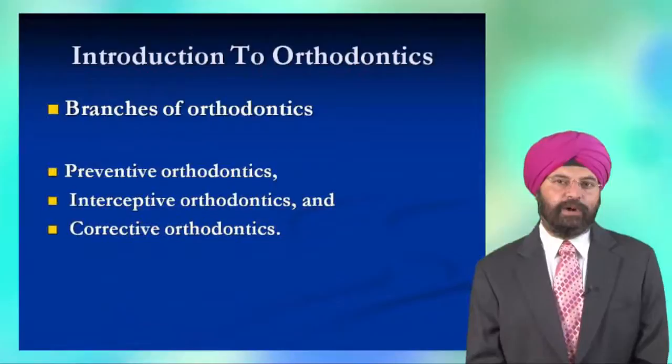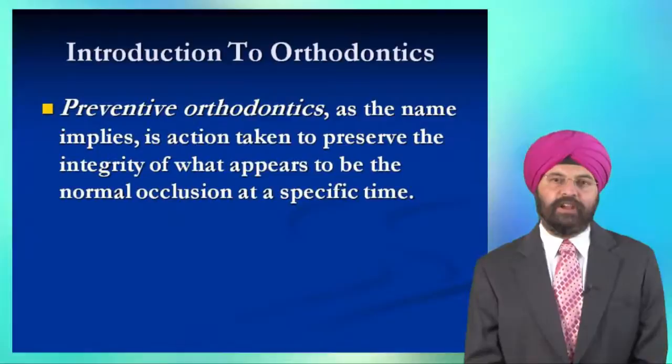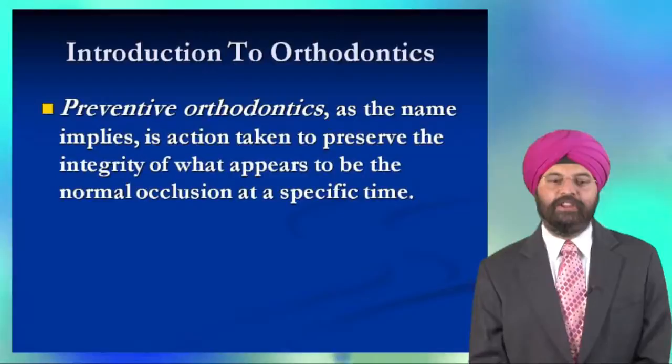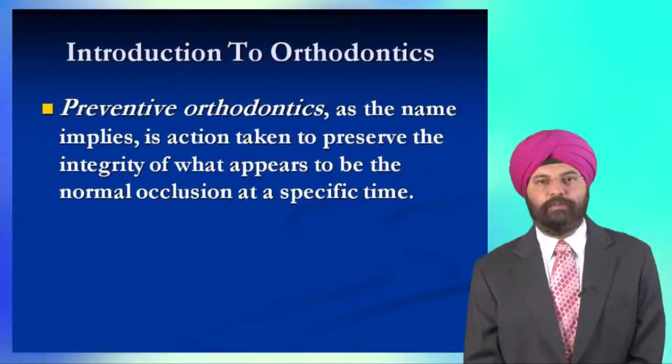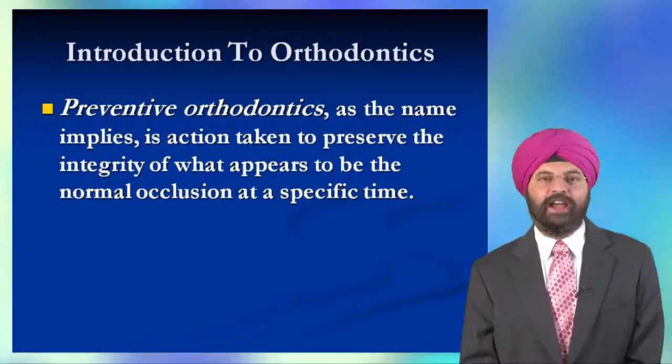Basically there are three branches of orthodontia: preventive, interceptive, and corrective. Preventive orthodontics deals with prevention of malocclusion and diagnosing what is normal for a particular age. Preventive orthodontics, as the name implies, is the action taken to preserve the integrity of what appears to be normal occlusion at that particular period of time. This is why the study of growth and development is so very important — unless you know what is normal for a particular age, you cannot diagnose, and thus you are not able to prevent if something is going wrong for a patient.